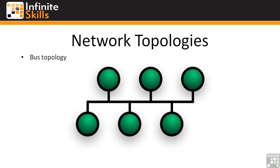You will see a logical bus topology if you happen across a token ring network. It's been a long time since I've seen a token ring network personally, but I'm certain they're still out there, and they're far more common than the old thick net networks. This is a physical topology we're looking at, but you can have a logical bus topology and a physical star topology, and we'll talk about the star topology in a couple of slides.